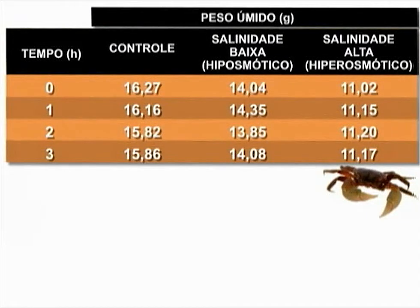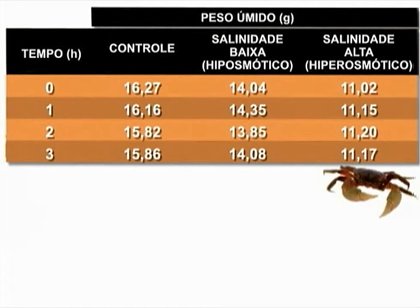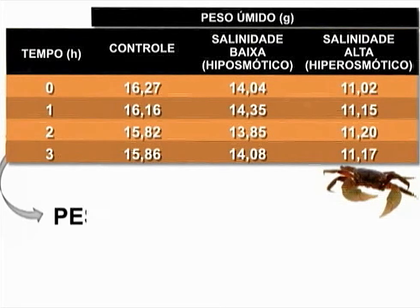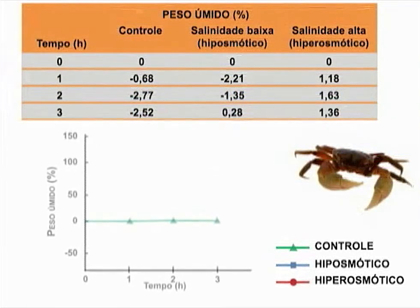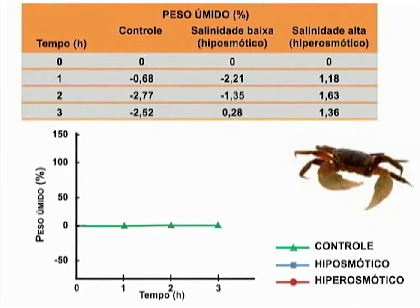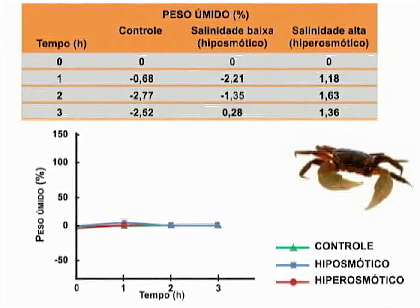Passaremos agora a analisar os dados resultantes da experimentação. Primeiramente, registramos nesta tabela os pesos dos caranguejos em cada salinidade nos diferentes tempos experimentais: zero, uma, duas e três horas. Para construirmos o gráfico, transformaremos os dados utilizando esta fórmula. Com base nos valores do peso inicial e do peso em cada tempo experimental, obtemos a variação percentual de peso dos animais. O gráfico apresenta o decurso da variação percentual do peso dos caranguejos. Podemos observar que, tanto na condição controle, quanto na hiposmótica e na hiperosmótica, o peso dos animais não varia, ou seja, eles mantêm o seu peso inicial.